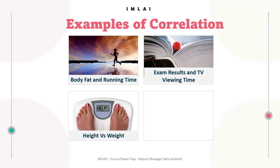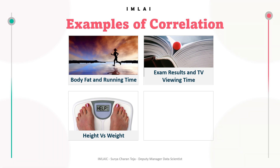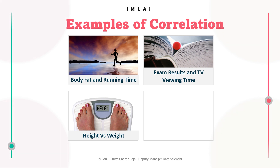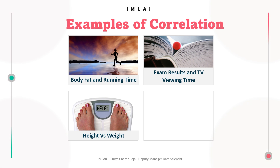The third example is height versus weight. The relationship between a person's weight and height is generally positive — bigger people often weigh more, so it is positively correlated. If height increases, the weight of the person also increases. It may not always hold perfectly, but it is generally correct.